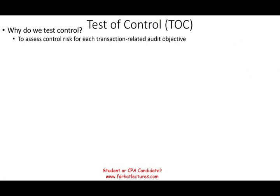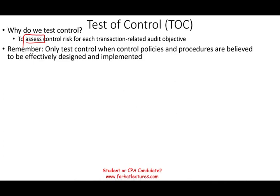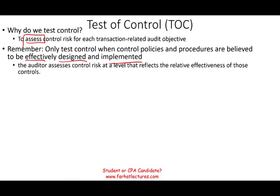Why do we test controls? To assess the control risk for each transaction-related audit objective. You only test the control if you are going to rely on it — if you believe it's effectively designed and implemented. Otherwise, you don't test it. You assess the internal control and the control risk at a level that reflects its relative effectiveness: medium, high, or low.